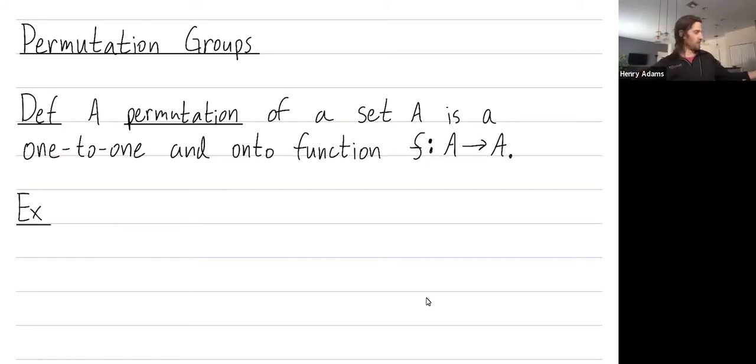So let's start with what is a permutation. A permutation of a set A is a one-to-one and onto function from A to itself. So another name for one-to-one is injective, and another name for onto is surjective. And when you are both injective and surjective, another name for that is bijective. But I won't be using that terminology so much here.